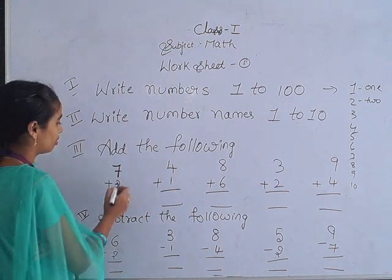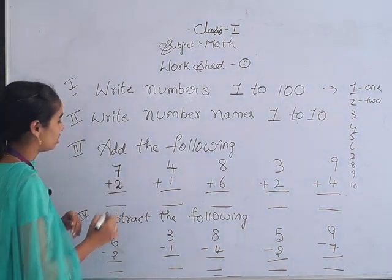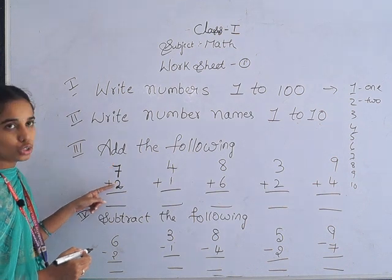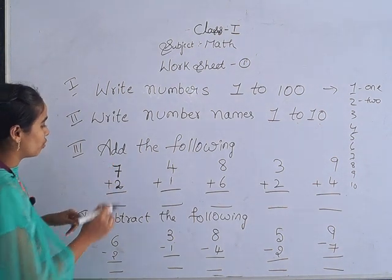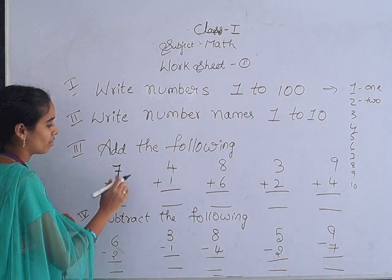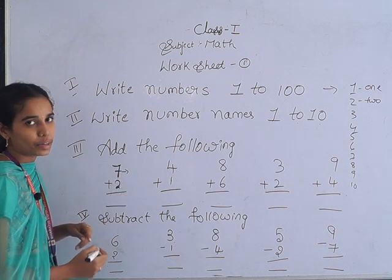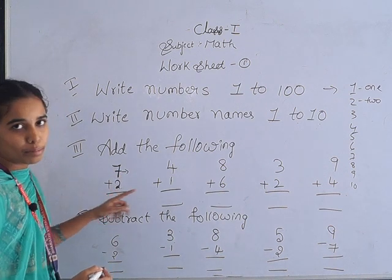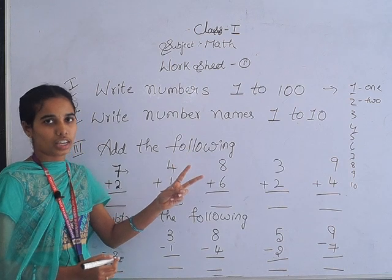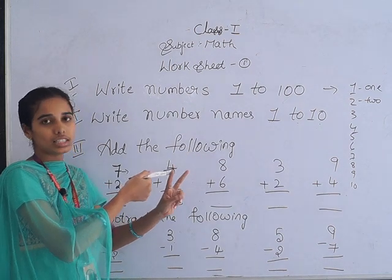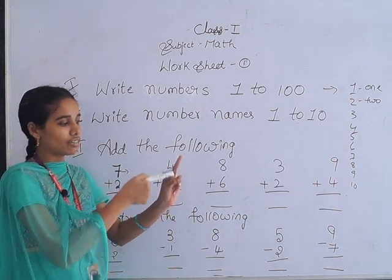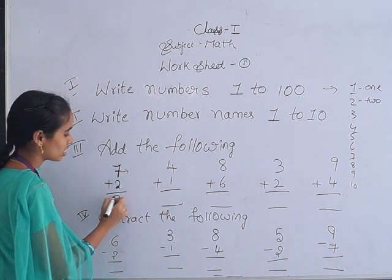Here, what numbers are given? Seven and two. Which number is the big one? Seven. So keep this one in your mind, and the small number you have to open with your fingers. In your mind, seven is there - count after number seven: eight, nine. So the answer is nine. Like that you have to do the remaining problems in your book.